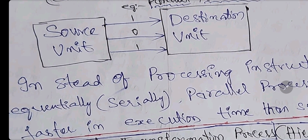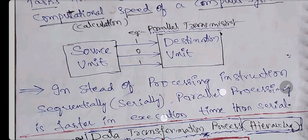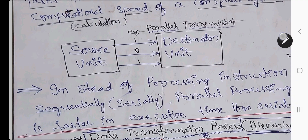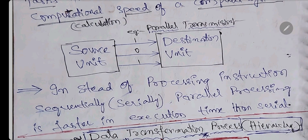That is the simple short answer question covered. Instead of processing instructions sequentially (serially), parallel processing executes them simultaneously. Parallel processing is faster in execution time than serial processing.